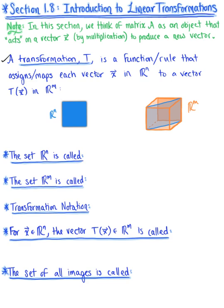A transformation, denoted by capital T, is a function or rule that's going to assign or map each vector x in Rn to a vector T of vector x in Rn. Looking at this illustration, we have our set Rn, and within this set lives a vector x. In the set Rn, we have another vector denoted as capital T of vector x. So what a transformation does is it takes each vector x in Rn and maps it to that vector T of x.